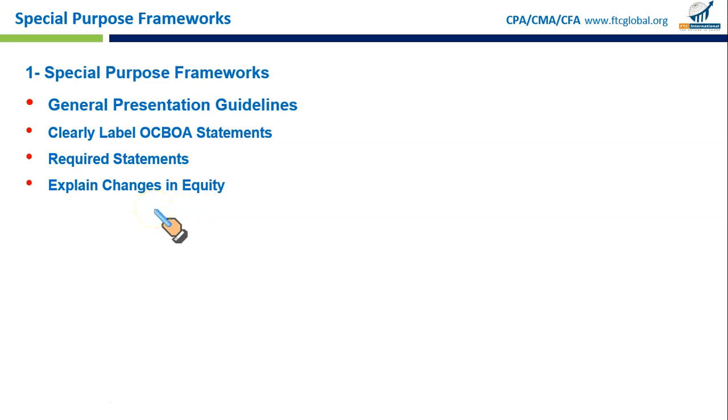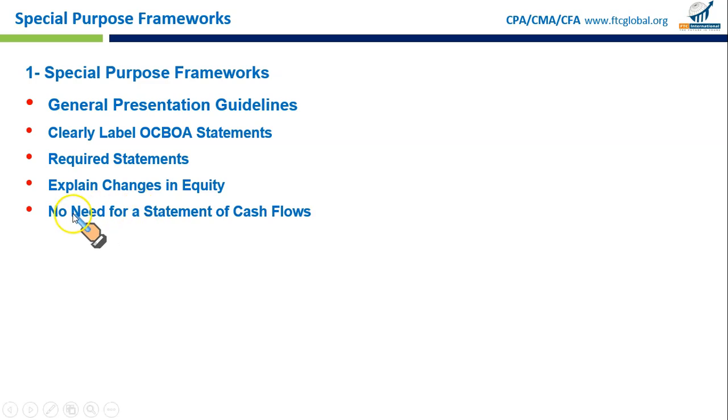The financial statements should also explain any changes in ownership or equity over the period of time, similar to a statement of changes in equity. For example, if a business owner contributes more capital during the year, the financial statement should show and explain this change.